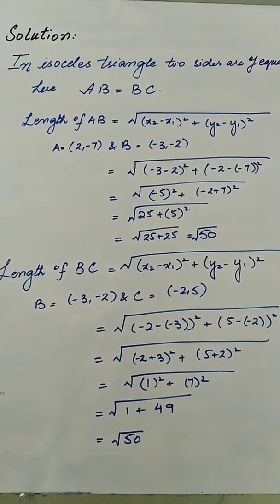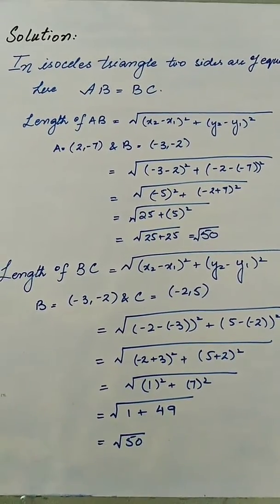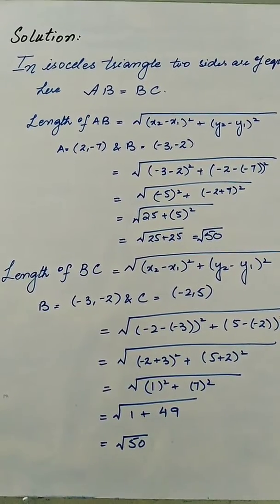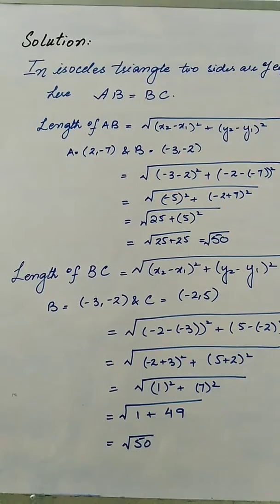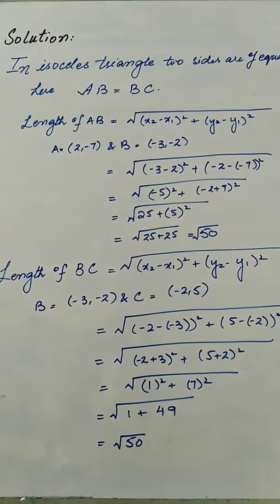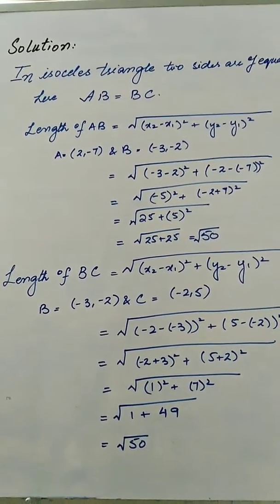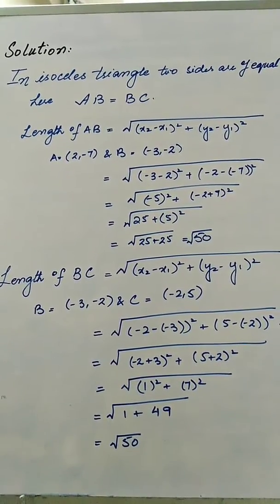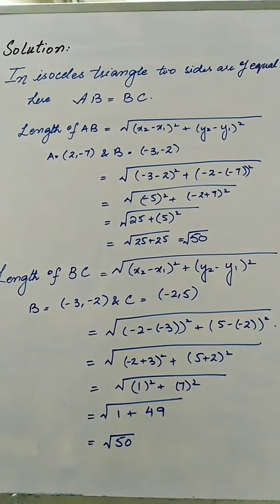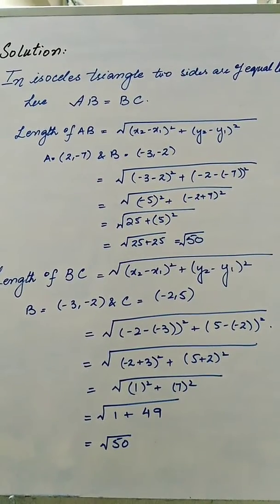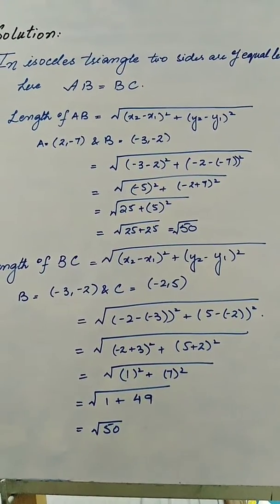We calculate the length of AB using the distance formula. The coordinates of A are (2, -7) and B are (-3, -2). By putting these values into the formula, the length of AB comes out as root 50. Again we calculate the length of BC, where B is (-3, -2) and C is (-2, -5). Putting these values into the formula, the length of BC also comes out as root 50. Since the two lengths are equal, it is proved that this triangle is an isosceles triangle.